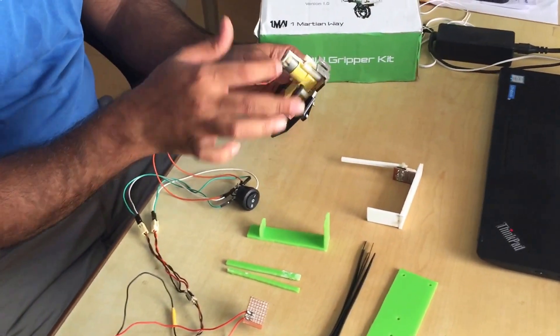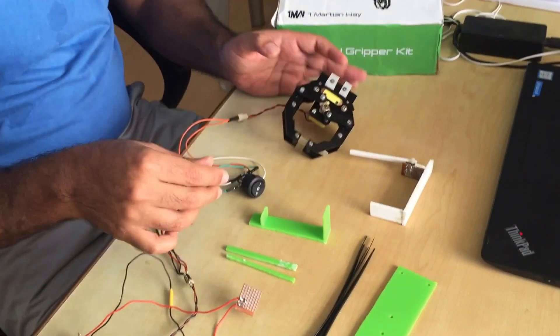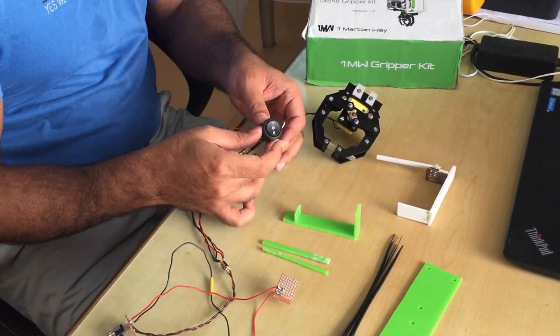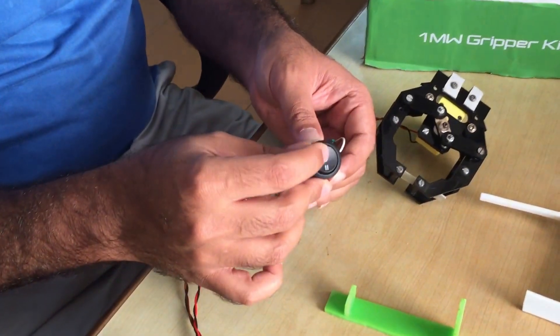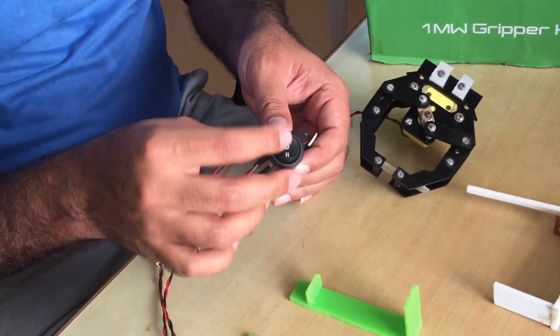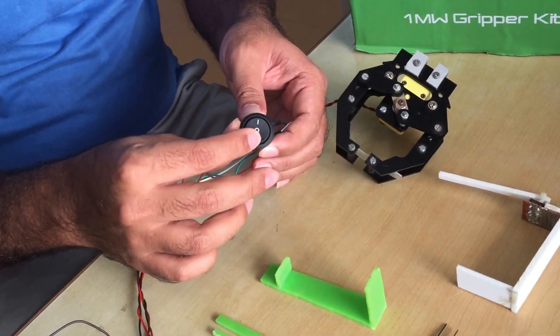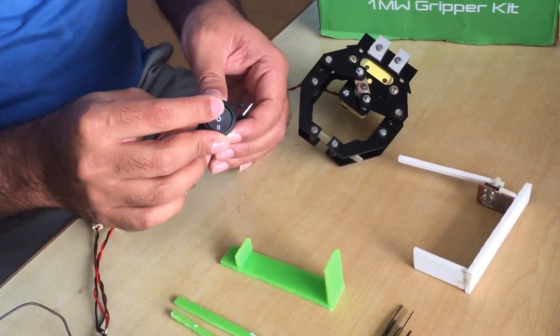It's a bi-directional DC motor and the direction of the motor is controlled by this particular switch. So when the switch is in one position it tries to open and in two position it tries to close, and whenever it is neutral it does not do anything.